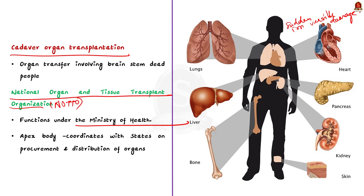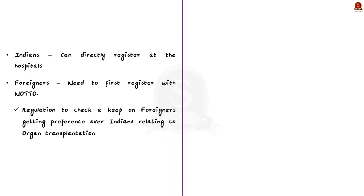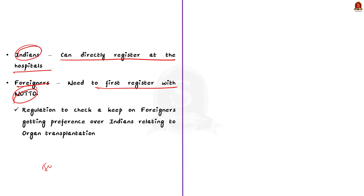Indians looking forward to organ transplantation are allowed to directly register with private hospitals. Foreigners are only allowed to do so after first getting registered with NOTTO, and only then with respective private hospitals recognized for organ transplant in India. This procedure was established after incidents were reported in which foreigners got organs before Indian nationals on the waiting list. People above 65 years can now also get organ transplantation, and domicile certificates are no longer required.